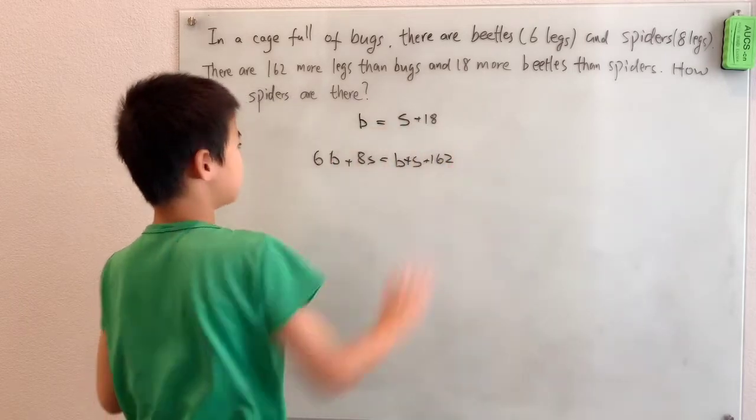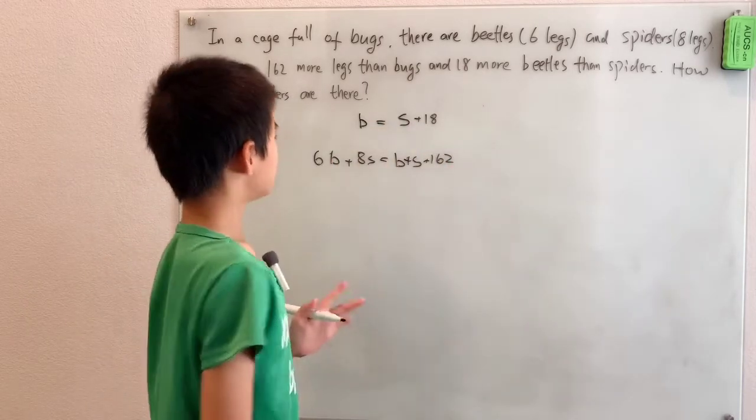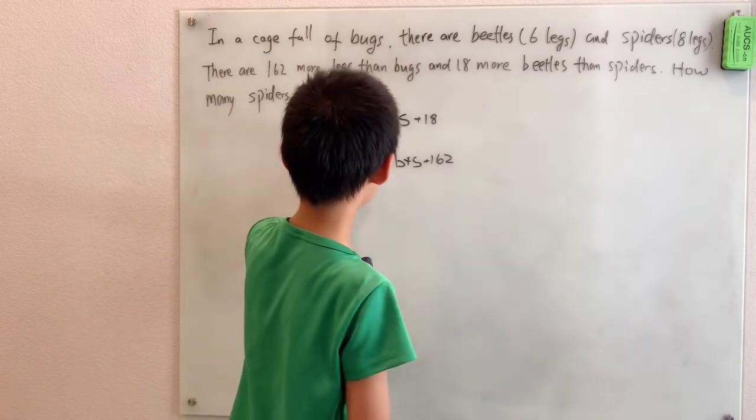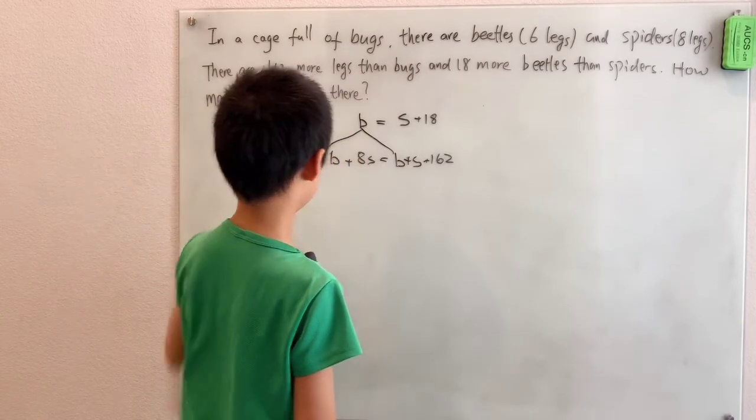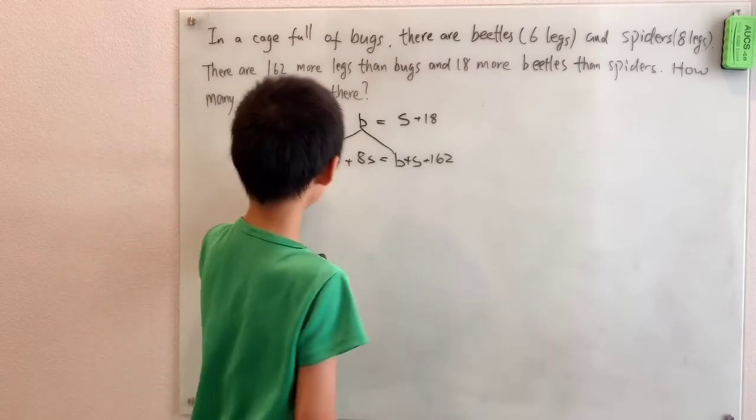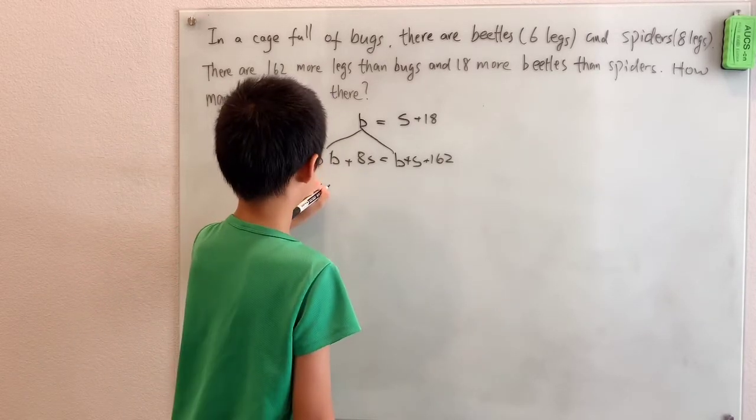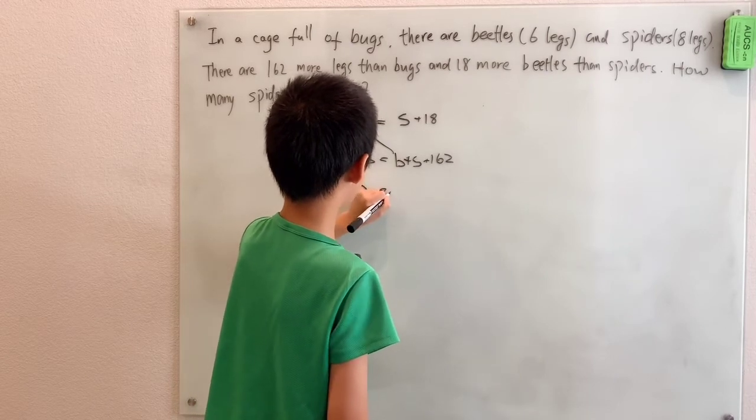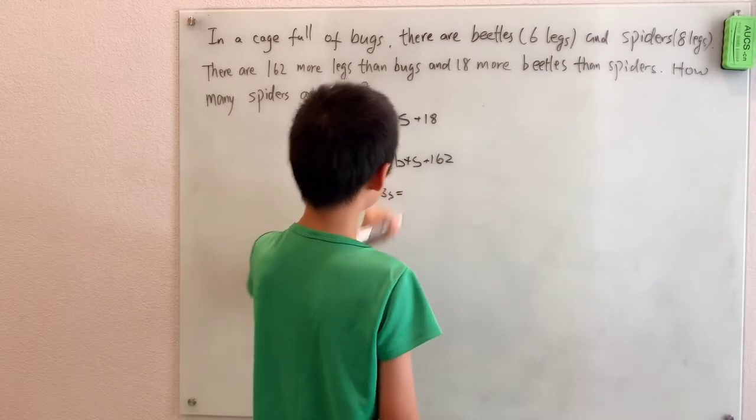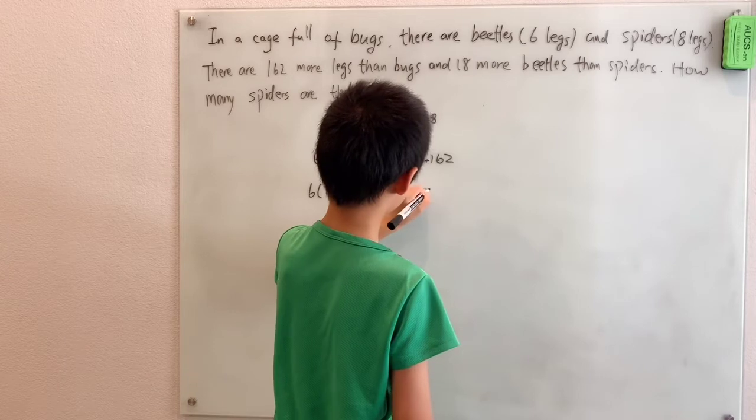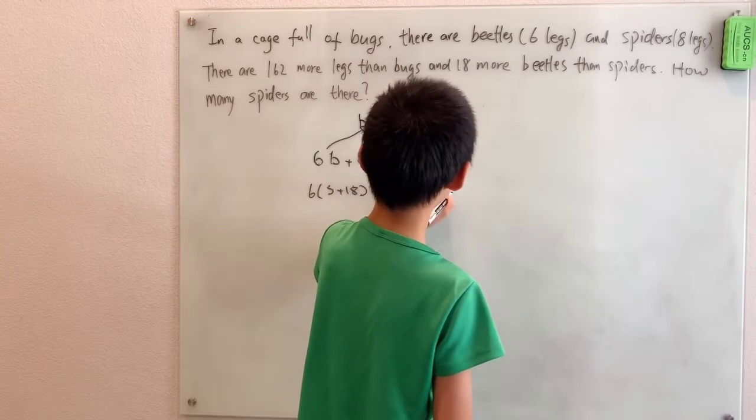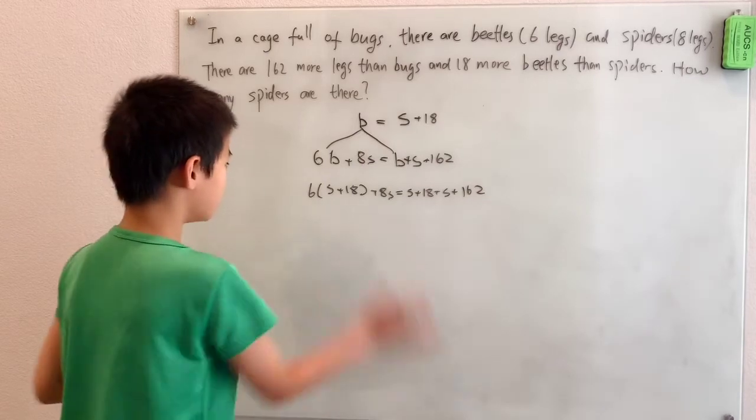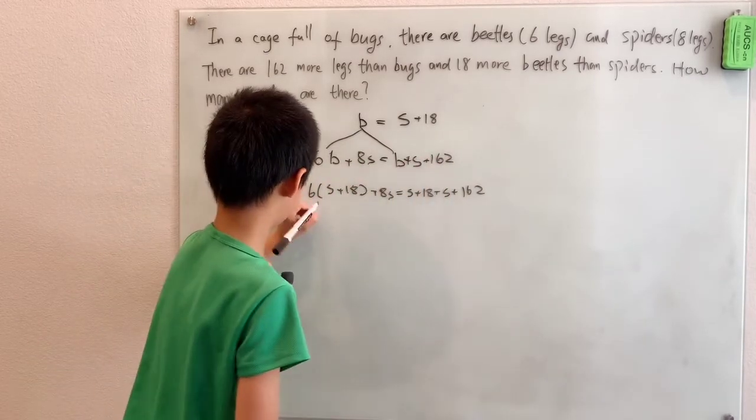So we have our two equations, and just solve for S, which is what we want, spiders. It's pretty simple. We can just plug in B for each of the Bs that we have. We have 6 times S plus 18 plus 8S equals S plus 18 plus S plus 162.